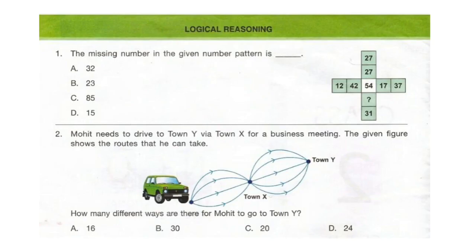Question 1: The missing number in the given number pattern is dash. Look at the number pattern and try to find your answer. The correct answer is option B, 23. Here 54 is the sum of each number in its row: 12 plus 42 is 54, 27 plus 27 is 54. Similarly, 54 minus 31 will give 23.